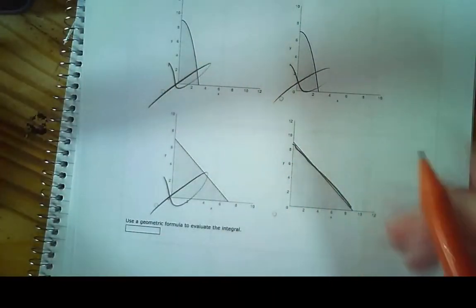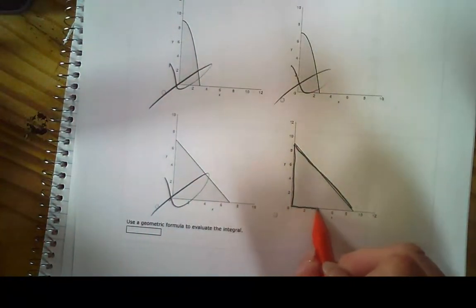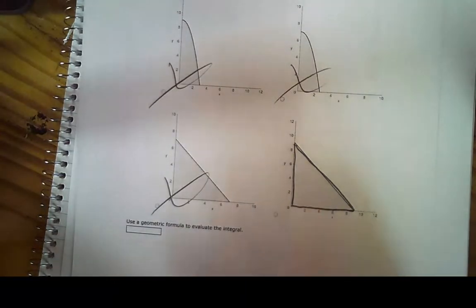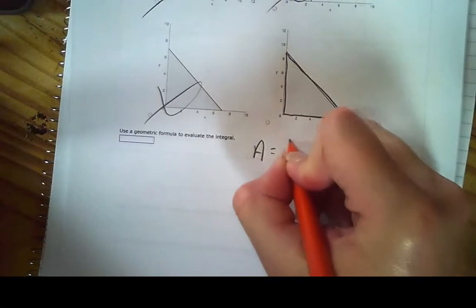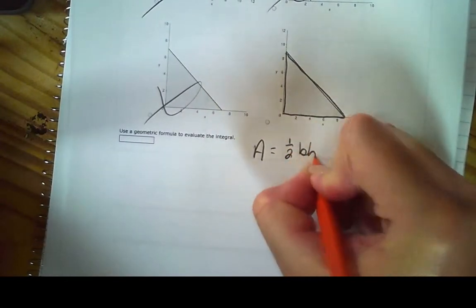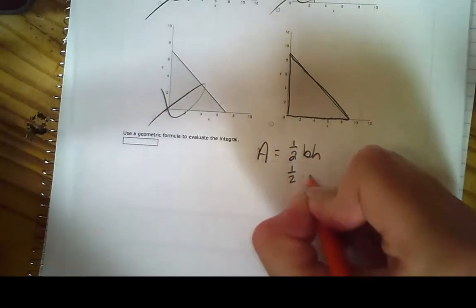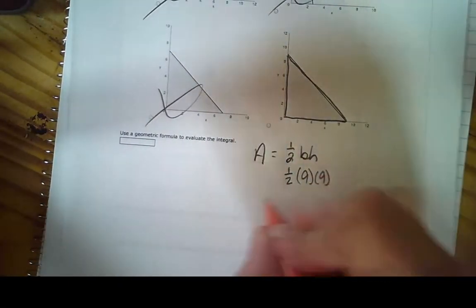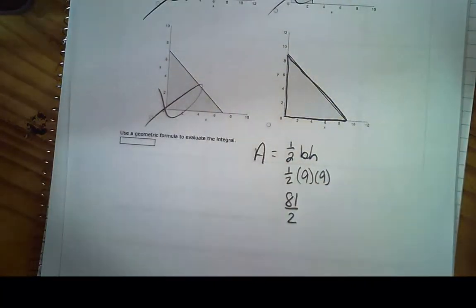Now, instead of us integrating this, do I know how to use a geometric formula to find the area of this thing? Last time I checked, that's a triangle. So I have area equals half of base times height. What's my base? It is 9. What's my height? It is 9. So I end up with 81 halves.